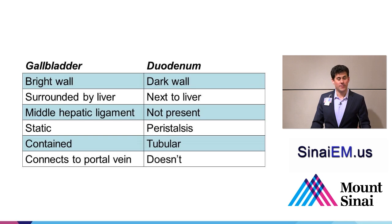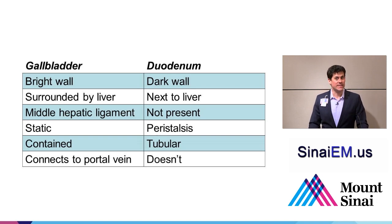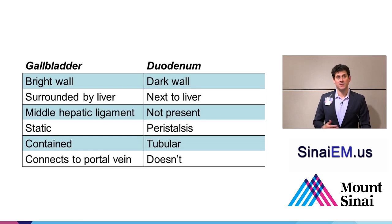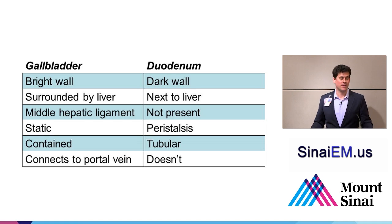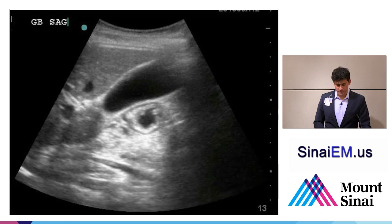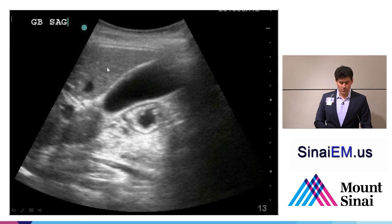The portal vein connects to the gallbladder, and does not connect to the duodenum. The portal vein is relatively easy to find if you fan up and down in a transverse plane at the X-7 spot. Any veins inside the liver with a bright white wall surrounding them are portal vein tributaries — trace them back to the left and right portal vein and then into the main portal vein, which should connect to the gallbladder. Here we see the liver, the gallbladder much more surrounded by liver than the duodenum, with a bright white wall and connection through the middle hepatic ligament down to the portal vein.